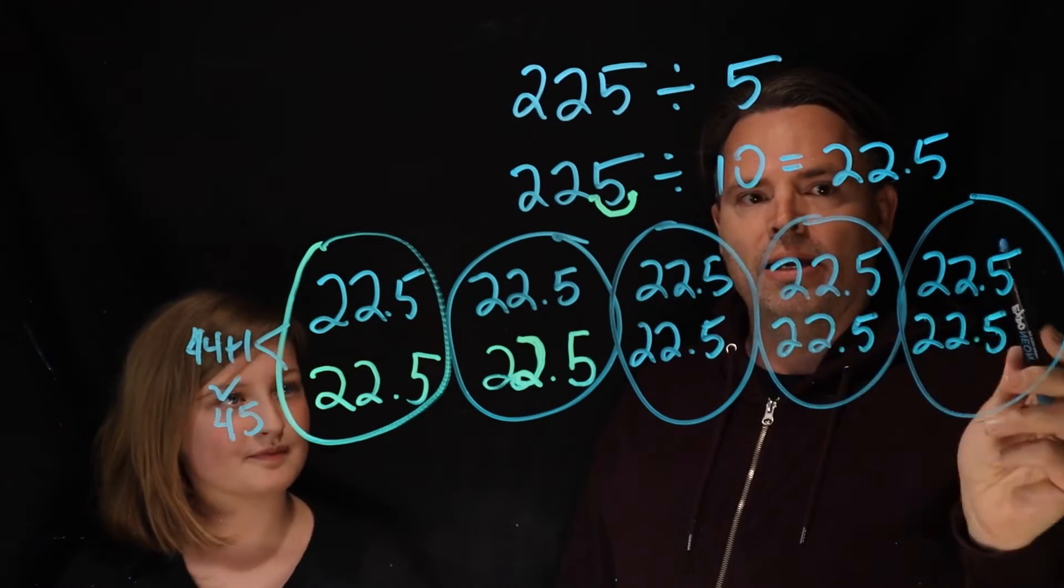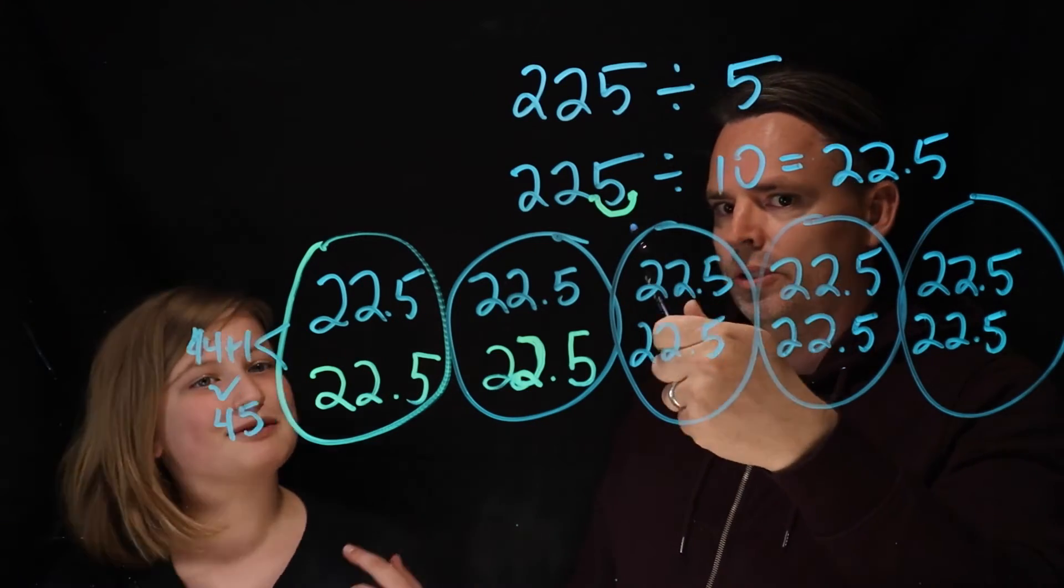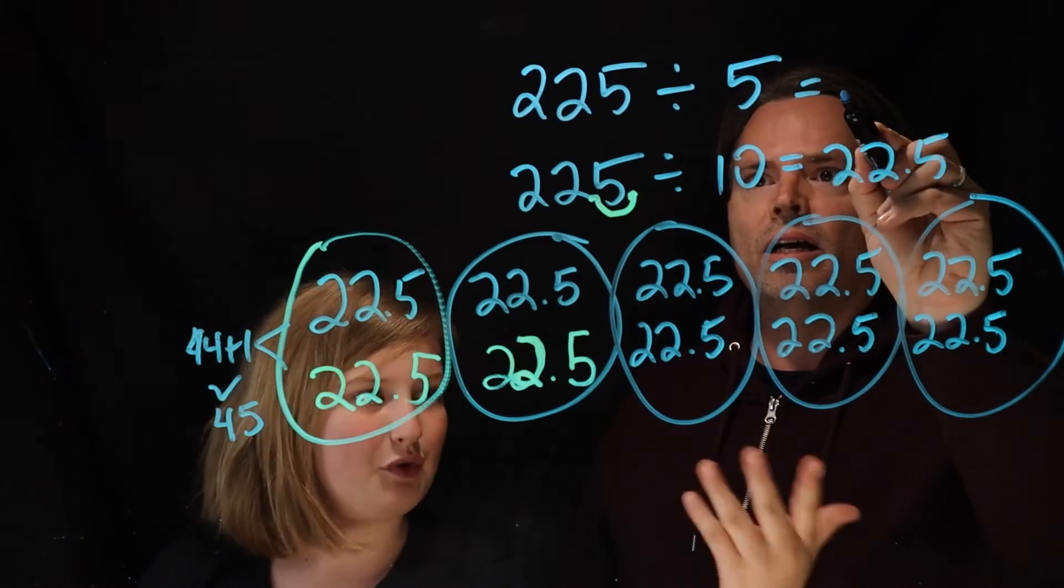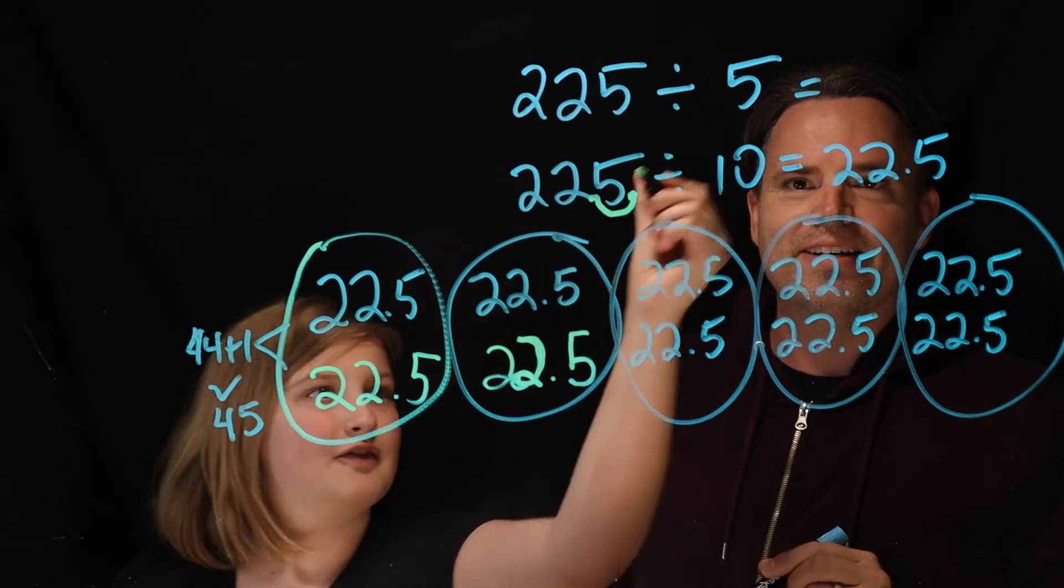So then if we had, we were looking at 225 divided by 10, we had 10 equal groups, but we don't need 10 equal groups, we only need 5 equal groups. So we made it 5 by adding those together: one, two, three, four, five. So what is 225 divided by 5?